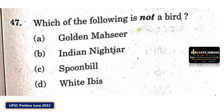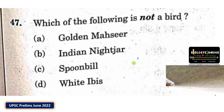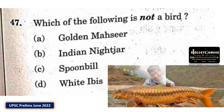Which of the following is not a bird? Golden Masheer is a large fish, so it is not a bird.